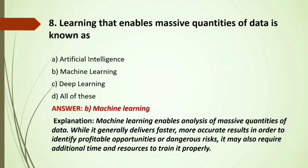MCQ: Learning that enables analysis of massive quantities of data is known as — A) Artificial intelligence; B) Machine learning; C) Deep learning; D) All of these. Machine learning enables analysis of massive quantities of data while generally delivering faster, more accurate results to identify profitable opportunities. Answer: Machine learning.